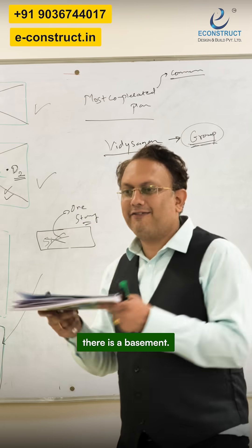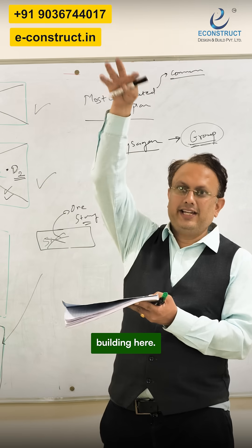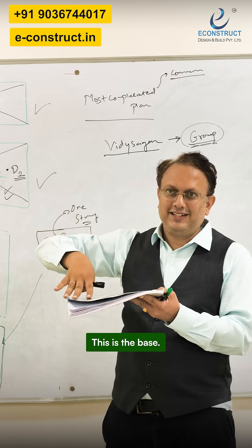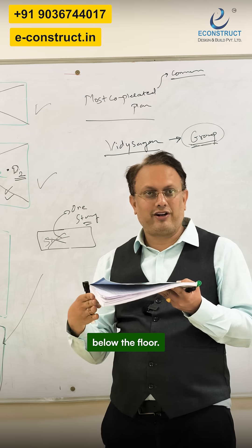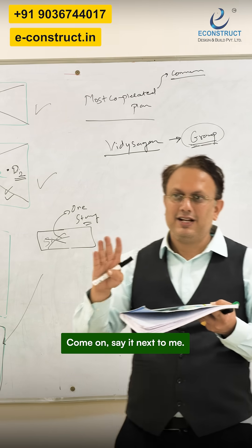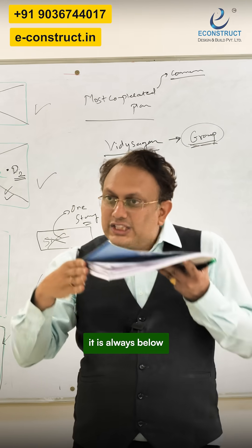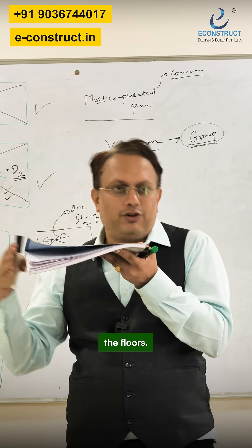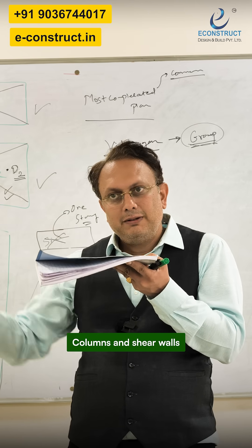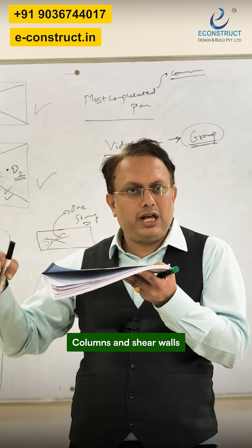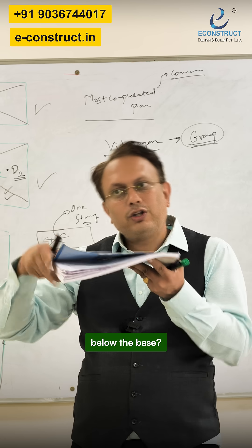Imagine there is a basement — this is the base. Above that there is a building. Whenever you draw the shear walls or columns, they are always below the floors. Columns and shear walls go below the floor. Do you agree?